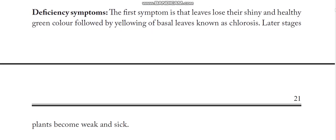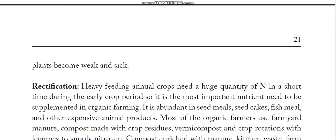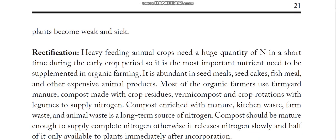Deficiency symptoms of nitrogen: the first symptom is that leaves lose their shiny and healthy green color. They turn yellow — mostly the chlorosis symptom, that yellowing symptom, appears in the lower leaves. In later stages, plants become weak and sick.